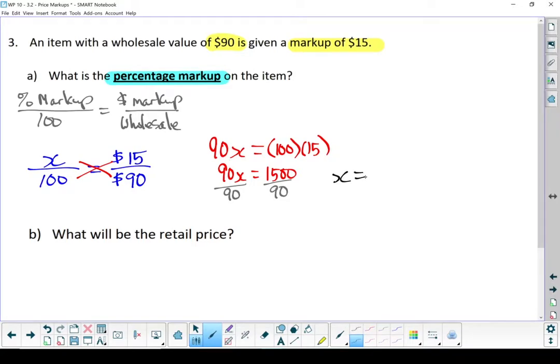And X equals 16.67%. The store is marking up that item by 16.67%. Question B asks, what will be the retail price?